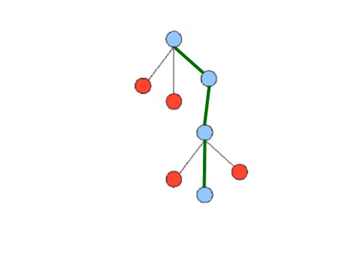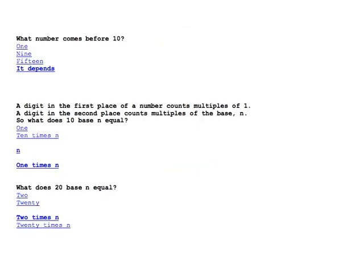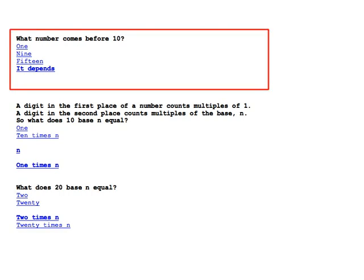Wiki-to-speech scripts leverage this idea. Here is an example Wiki-to-speech script dealing with place value with different bases. It has three questions. Each question has four possible answers. The first question is a challenge to conventional thinking. It asks, what number comes before 10?